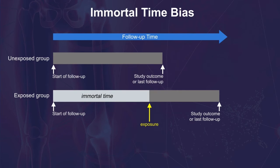The result of including this immortal time in the calculation of event rates for the exposed group is that the true outcome rate is underestimated, because these patients are granted this follow-up time without the possibility of the study outcome occurring.